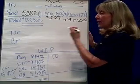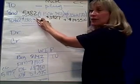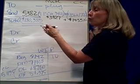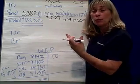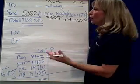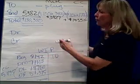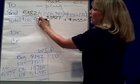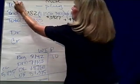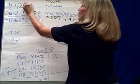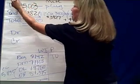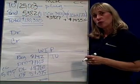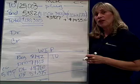So that means that if ending inventory is going to be assigned $5,382, the rest of the cost has to go to transferred out. The difference between the total cost of $130,385 and $5,382 is $125,003. So transferred out costs are being assigned a total of $125,003.